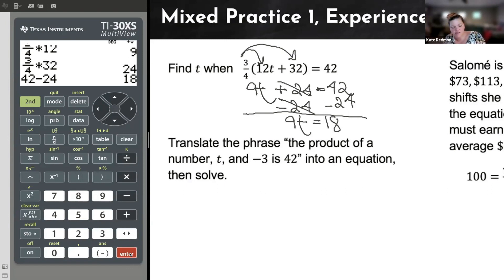Of course, t is not alone. This time I have a 9 hanging out. I'll divide that multiplying 9 away. Those are inverses, so they'll cancel. Multiplying and dividing by 9 are inverses. So t is alone, and 18 divided by 9 is two.